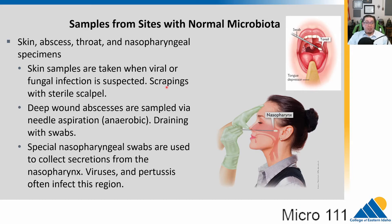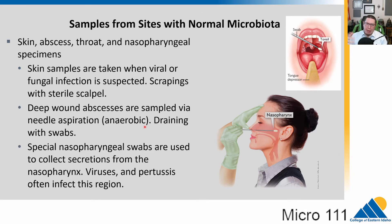Sites with normal microbiota include the skin, abscesses, throat, and nasopharyngeal samples. For skin, we can often take scrapings with a sterile scalpel looking for viral or fungal infections. Deep wound abscesses usually require needle aspiration and should be suspected to be anaerobic. If the abscess is open and draining, collect with a swab, considering both aerobic and anaerobic conditions. Nasopharyngeal samples — we're all too familiar with deep nasal swabbing. Viruses and bacteria often infect this region; tonsil swabs are also used.